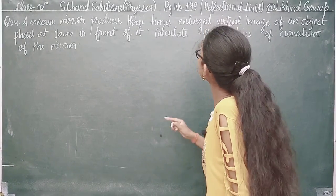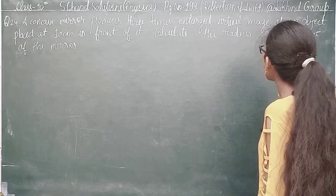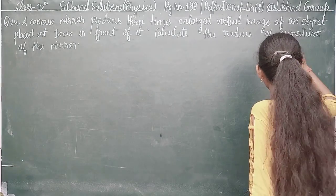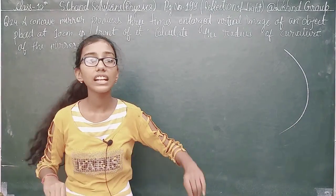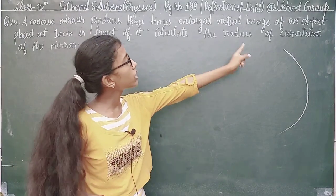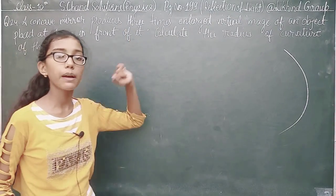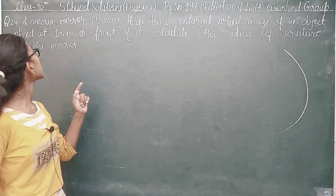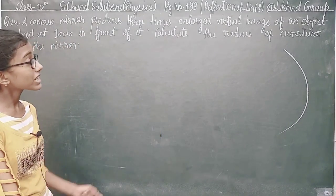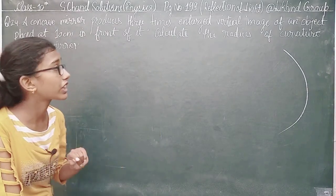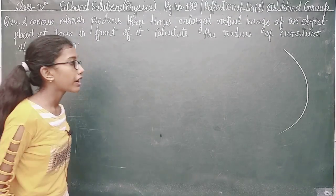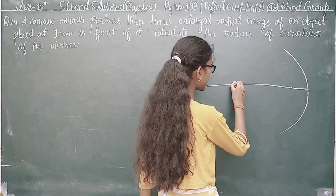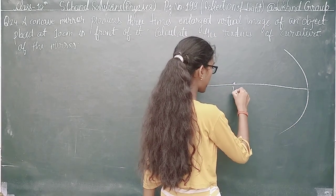A concave mirror produces 3 times enlarged virtual image of an object placed at 10 cm in front of it. This is a concave mirror which produces a 3 times enlarged virtual image, meaning the magnification has been given. The object is placed in front of the concave mirror at 10 cm.